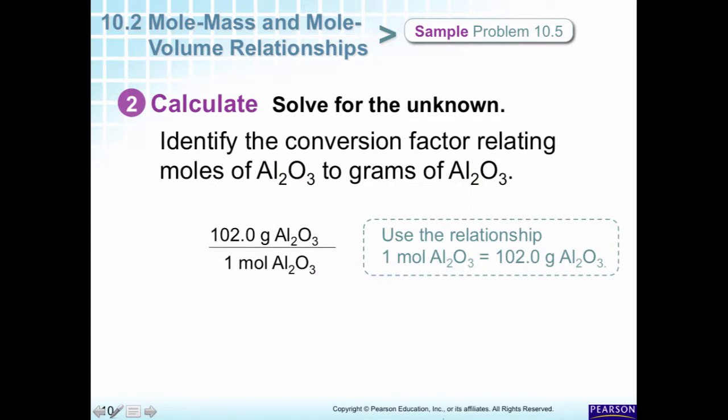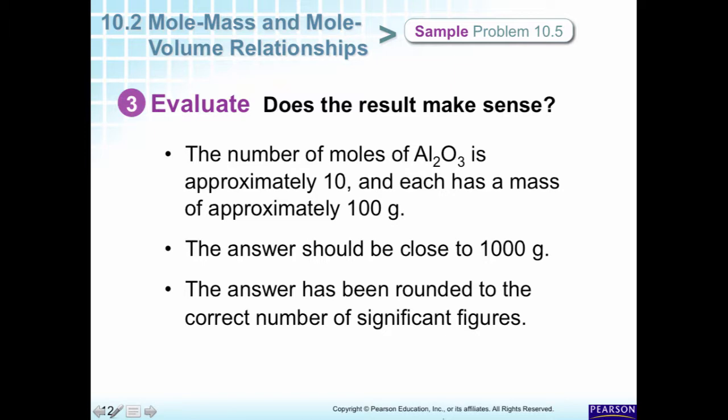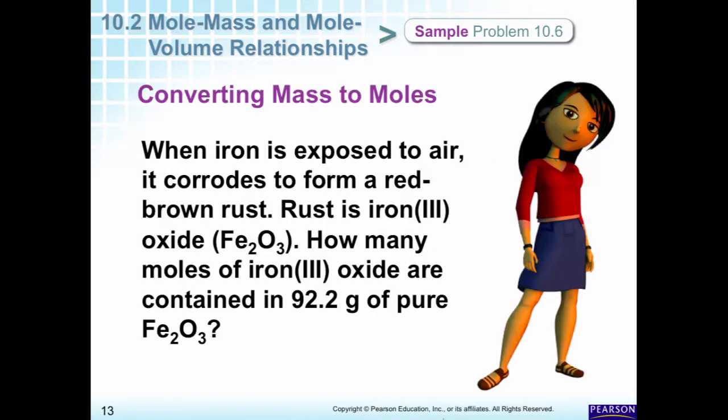We know how many moles we have, so we want to get grams. So we have 9.45 moles. Moles will cancel out. 9.45 times 102, 964. We can check it. Does it make sense? It does. And have we rounded the right number of significant figures? So let's try another one.